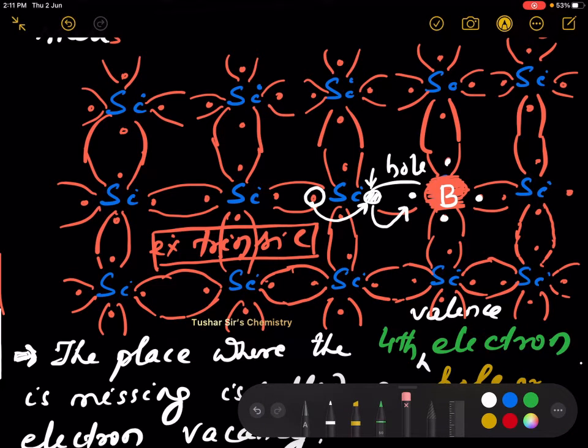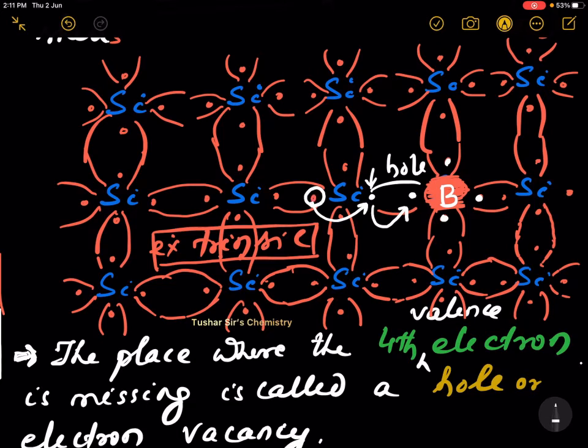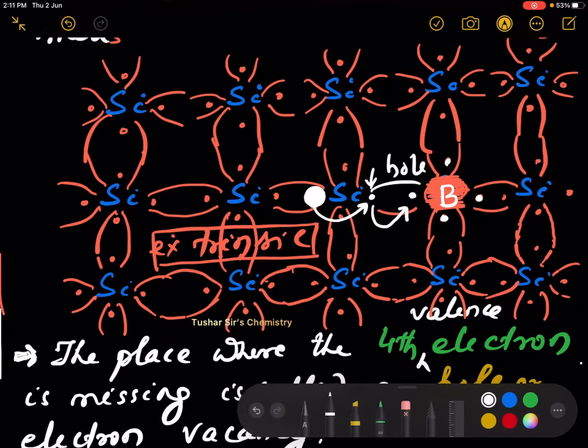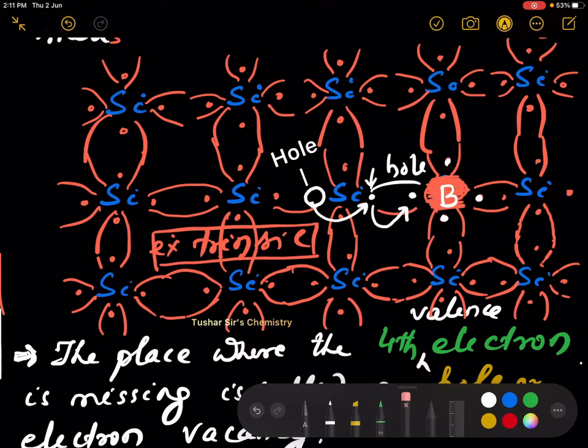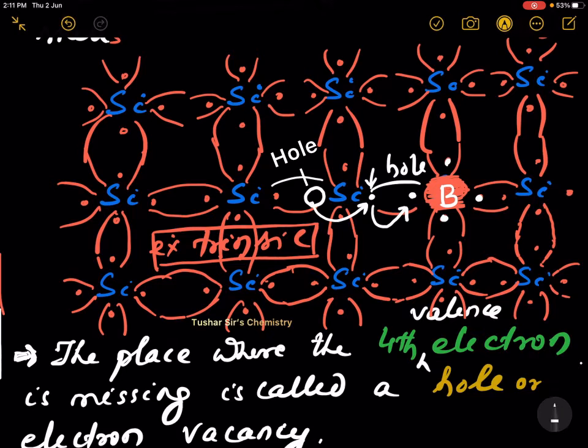You see, this hole is filled with this electron. And this electron is missing over here. And a hole is created.